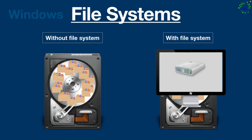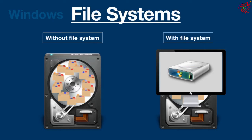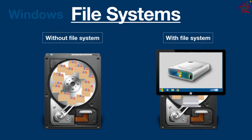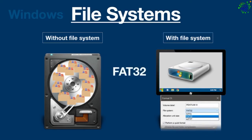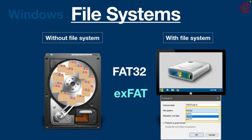Everything begins with partitioning. Most operating systems allow you to format a partition based on a set of file systems. For example, if you are formatting a partition on Windows, you can choose between FAT32, exFAT, and NTFS file systems.